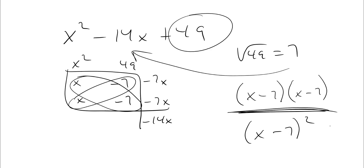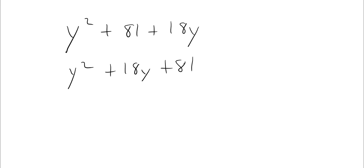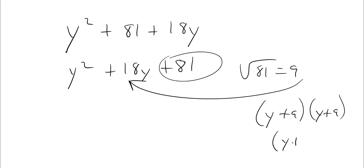The only thing is, even on your worksheet for homework, sometimes you have it in another order. So if I give it to you like this — y squared plus 81 plus 18y — make sure you put it in standard form first. So you're going to rearrange: y squared plus 18y plus 81. You can recognize that's a perfect square: square root of 81 is 9, multiply by 2 gives 18. So it's going to be y plus 9, y plus 9, or y plus 9 quantity squared.